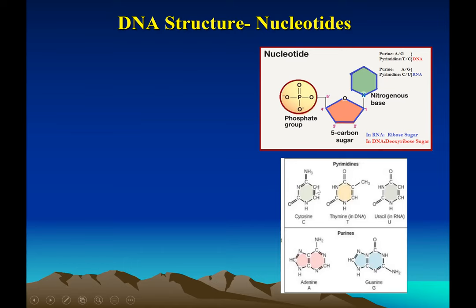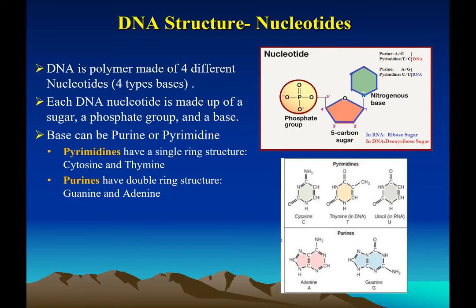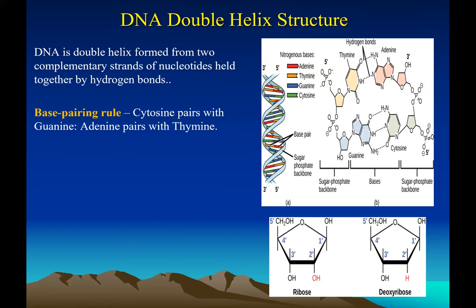Pyrimidines are single-ring structures. Pyrimidines are cytosine, thymine, and uracil; purines are adenine and guanine. In order to keep the width of the DNA constant, a double-ring structure must pair with a single-ring structure — that's why G pairs with C and adenine pairs with thymine. Uracil is only found in RNA. The bond between nitrogenous bases is a hydrogen bond, whereas the bond between the sugar and phosphate is a covalent bond.